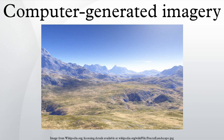Computer graphics software is used to make computer-generated imagery for films. Availability of CGI software and increased computer speeds have allowed individual artists and small companies to produce professional-grade films, games, and fine art from their home computers. This has brought about an Internet subculture with its own set of global celebrities and technical vocabulary. The evolution of CGI led to the emergence of virtual cinematography in the 1990s, where runs of the simulated camera are not constrained by the laws of physics.